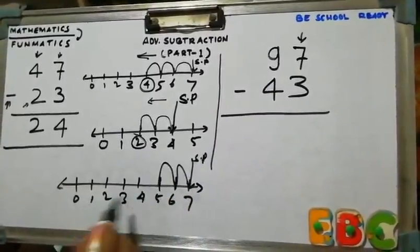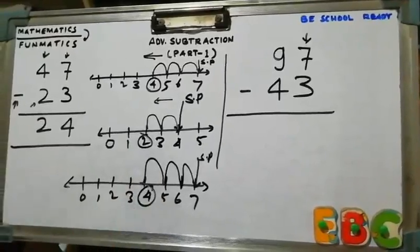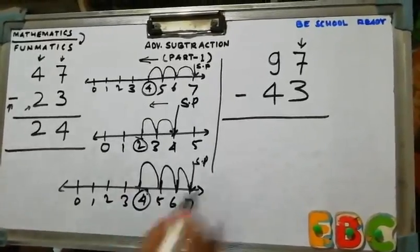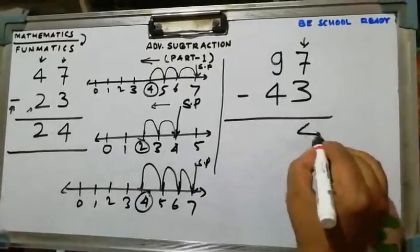So this is the starting point. We have to take 3 jumps: 1st jump, 2nd jump, 3rd jump, which is at 4. So this is 4.